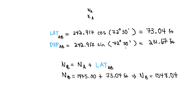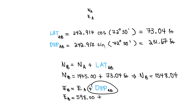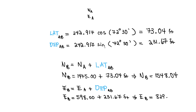For the easting at B: easting at B = easting at A + departure AB = 598.00 + 231.67 = 829.67. So our final answers are northing at B = 1548.04 and easting at B = 829.67.